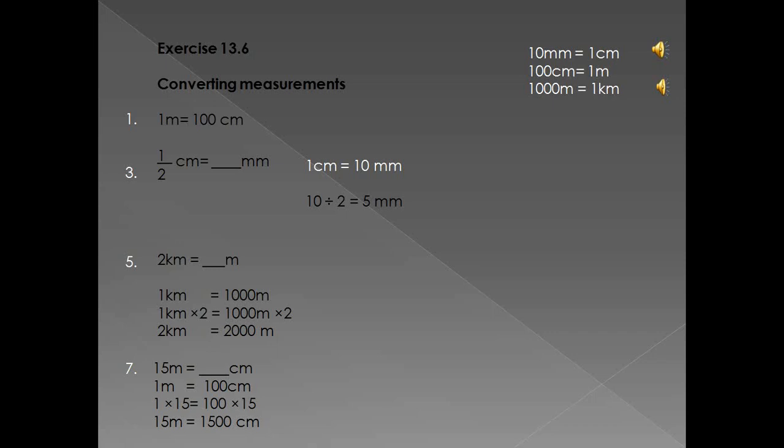Let's do another one together — number seven: 15 meters equals how many centimeters? We memorized that there is one meter for every 100 centimeters. Now we have 15 meters, so what did we do with the one meter to make it 15 meters? We times it by 15. So it's one times 15, and we do the same with the other side: 100 times 15. So 15 meters equals 1,500 centimeters. Now you can do the rest of the sums using this method.